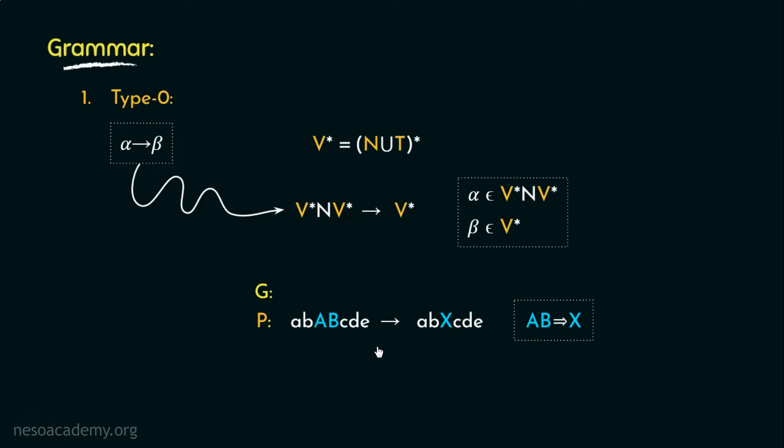So, since here alpha can generate beta, which can even include lesser number of elements than alpha itself. By the way, here beta can also have more elements than alpha. Right now, we are specifically talking about this production rule. So, basically, there is no restriction of any kind. Only requirement is that alpha must contain at least one non-terminal. This is why type 0 category is also known as unrestricted grammar.